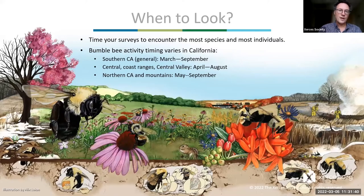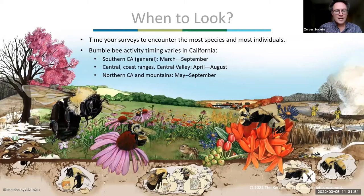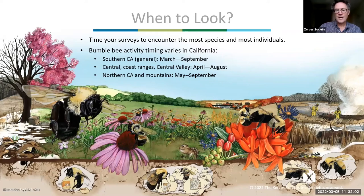When should you do your work? In Southern California, the bees are already flying, but we want you to start in mid-March. Central and coastal range areas and the Central Valley, maybe starting in April through August. In Northern California and the mountains, May through September. This will depend on the degree of drought, elevation, and other aspects of weather.